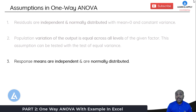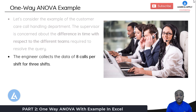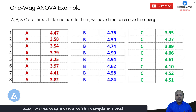Now let's jump into the practical example. We consider a customer care call handling department where the supervisor is concerned about differences in time required to resolve queries across different teams. The engineer collects data of eight calls per shift for three shifts. Since we are comparing more than two samples — the time for three different shifts — the engineer decided to test the significance of the difference in means by performing one-way ANOVA. A, B, and C are the three shifts, and for each shift eight observations of time to resolve the query were collected.